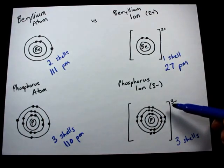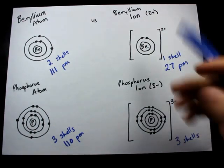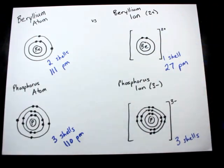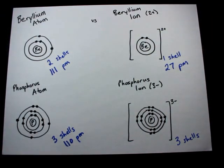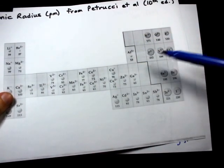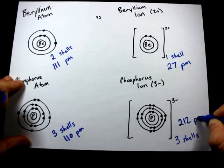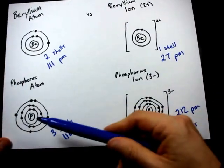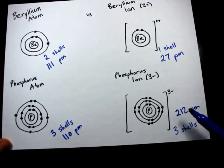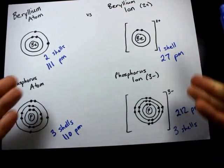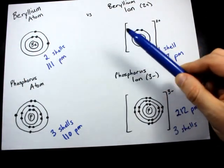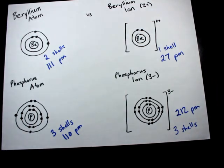Phosphorus 3 minus, which we've added electrons to, and so there's extra repulsion between the electrons, bulges to 212 picometers. Look at that. The non-metals get larger when you add electrons, and the metals get smaller because you're losing electrons.